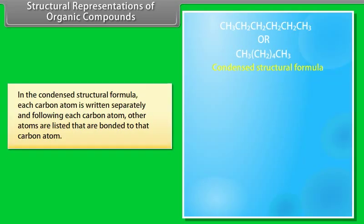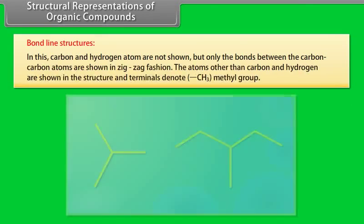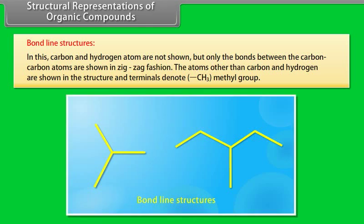In the condensed structural formula, each carbon atom is written separately and, following each carbon atom, other atoms bonded to that carbon are listed. In bond-line structures, carbon and hydrogen atoms are not shown, but only the bonds between carbon-carbon atoms are shown in a zigzag fashion. Atoms other than carbon and hydrogen are shown, and the terminals denote methyl groups.